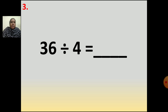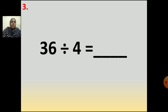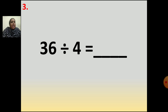Now the third question: 36 divided by 4 equals dash. Here also, which table will you say? Table of 4. In the table of 4, you have to find when you get 36. So you will say the table of 4: 4 ones are 4, 4 twos are 8, 4 threes are 12, 4 fours are 16, 4 fives are 20, 4 sixes are 24, 4 sevens are 28, 4 eights are 32, 4 nines are 36.